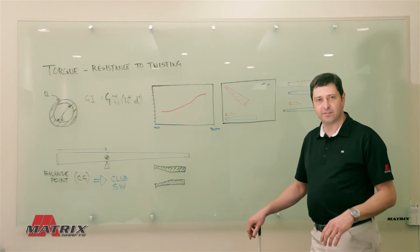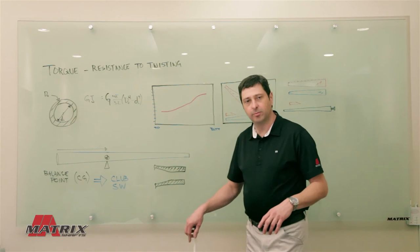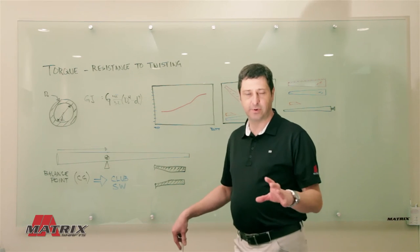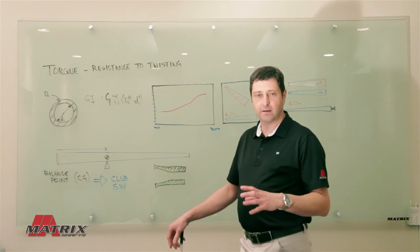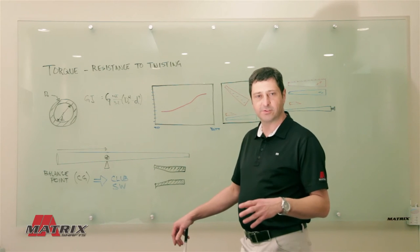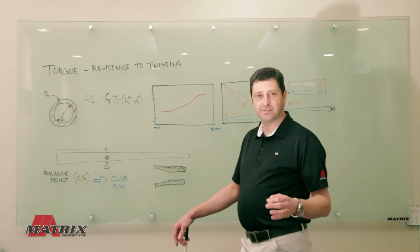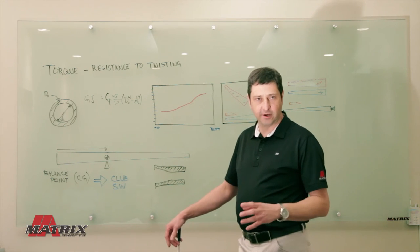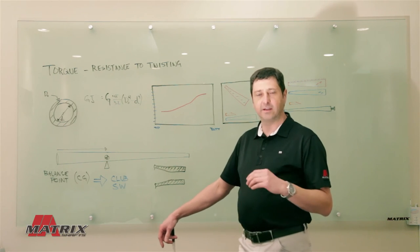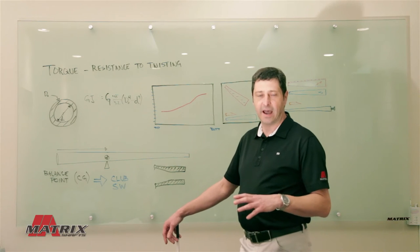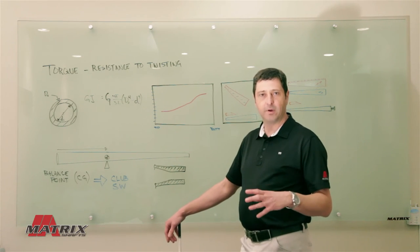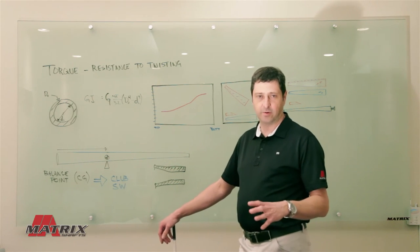A higher torque shaft can help a slower swing speed player position the club face more square at impact, whereas a faster swing speed or a stronger player may need a lower torque shaft to help them position the club face more accurately.